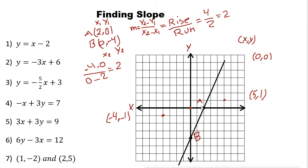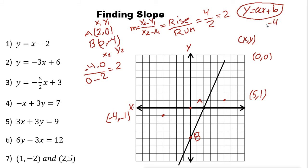To find the slope from an equation, use the slope-intercept form: Y = AX + B. Here, A is the slope — anything multiplied by X is the slope — and B is the Y-intercept, the value of Y where the line crosses the Y-axis. Here B is negative 4 and A is 2, so the equation is Y = 2X + (−4), which simplifies to Y = 2X − 4.